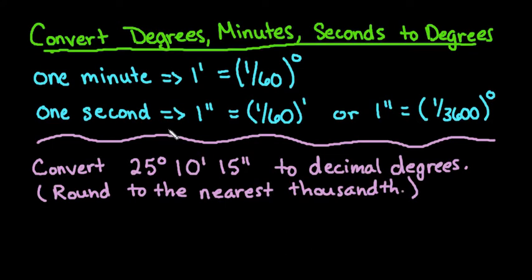Hi, for this video we're going to go from degrees, minutes, seconds to degrees, also known as decimal degrees. We're going to use the two conversions that one minute is equal to 1/60th of a degree and one second is equal to 1/60th of a minute.